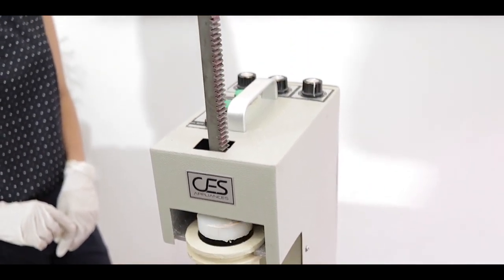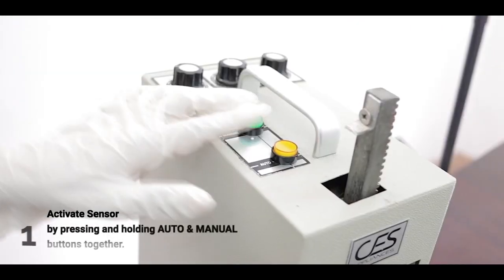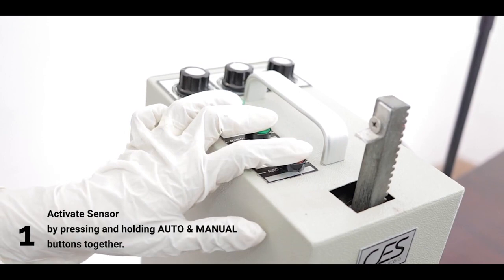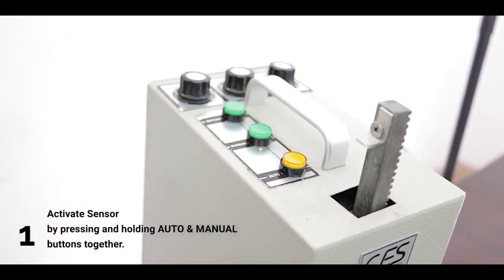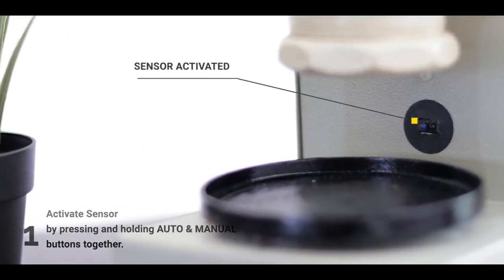Now, let's see how to use the automatic mode with the tray sensor. After removing any trays, press and hold both manual and auto buttons together for one second. This will enable the tray sensor.